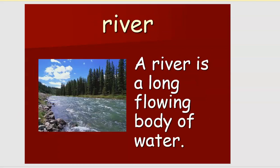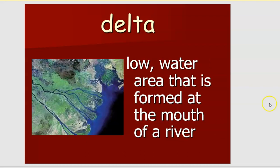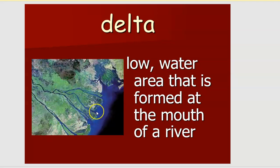The animal most commonly seen in the desert is the camel. What is a river? A river is a long, flowing body of water — you can see in the picture the continuous flow of water. What is a delta? A delta is a low-water area formed at the mouth of a river. This low area formed at the river's mouth is called a delta.